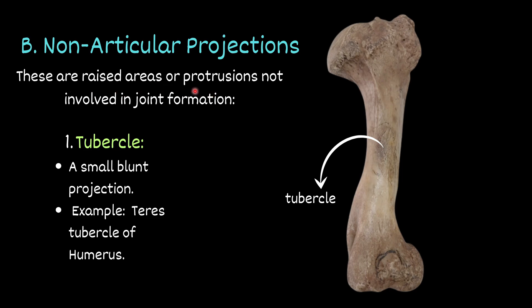Now we discuss various non-articular projections. These are raised areas or protrusions on the bones; they are not involved in joint formation. First, tubercle — a small blunt projection. For example, the greater tubercle of the humerus. You can find this structure here — this structure is called tubercle, a small blunt projection.